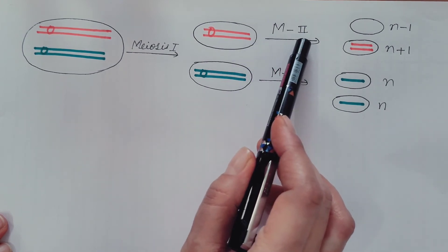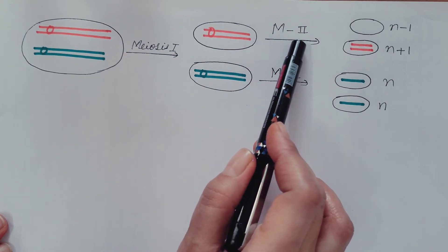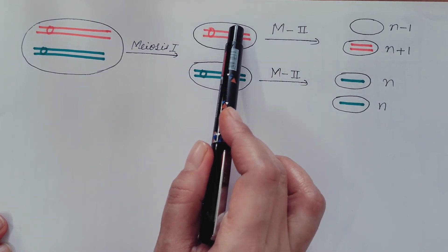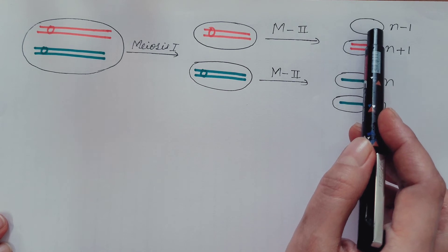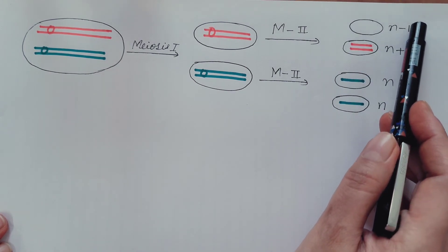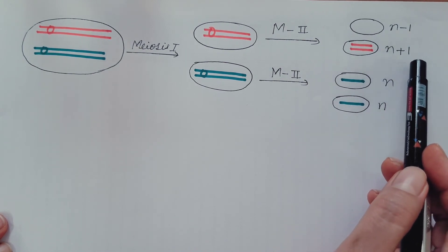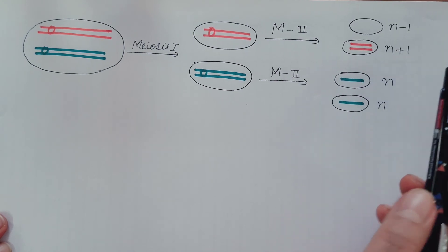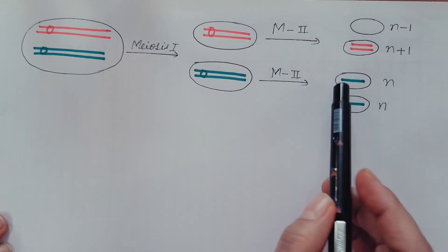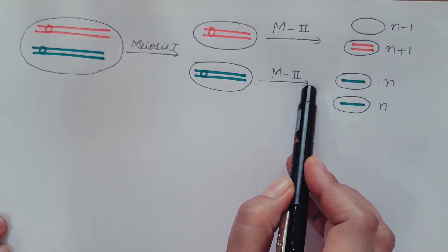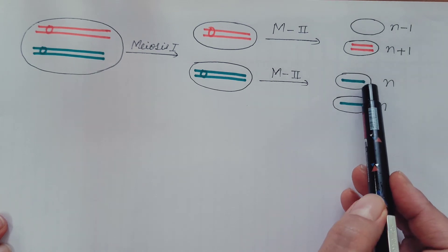If instead there is an error in meiosis 2, the two sister chromatids fail to separate. As a result, one gamete has one chromosome less (n−1) and another has one extra chromosome (n+1), while the remaining gametes have the normal haploid number. In this case meiosis 2 takes place normally with no error, so sister chromatids separate and the gametes obtained have the normal haploid number of chromosomes, represented as n and n.